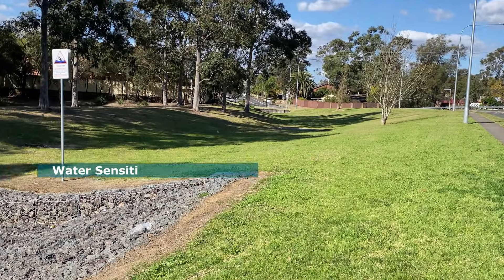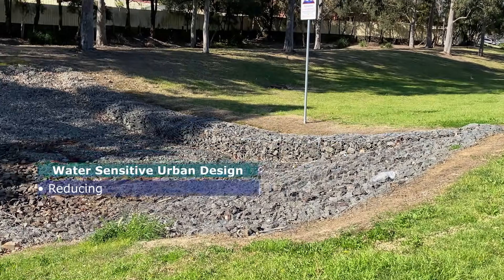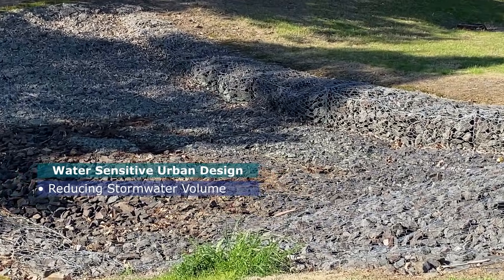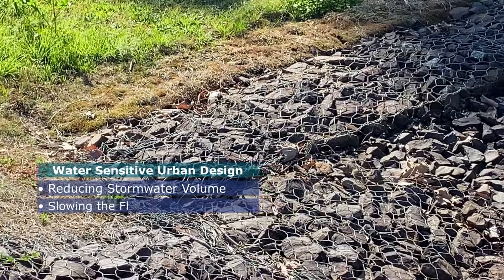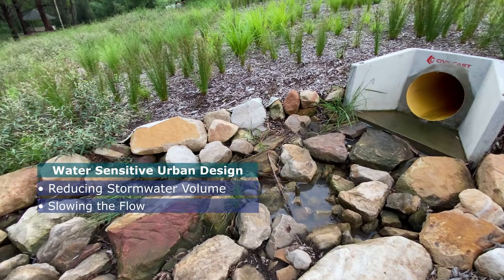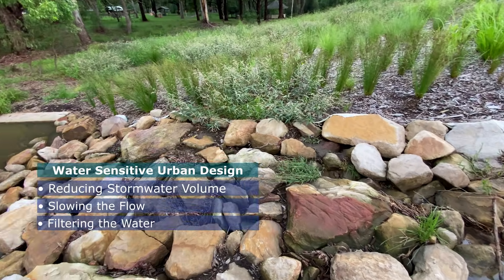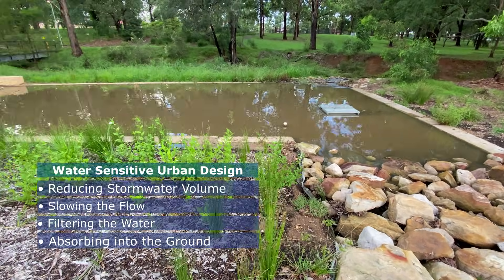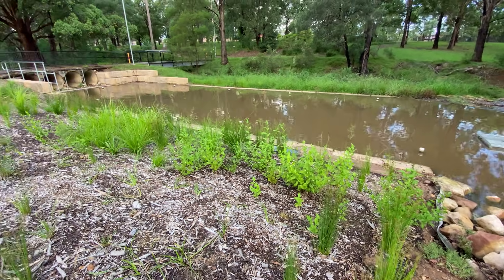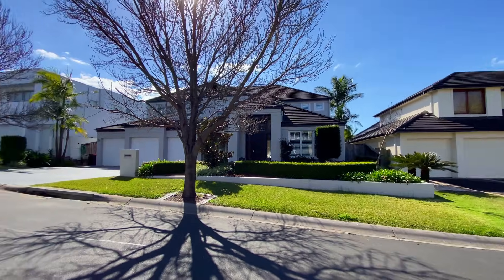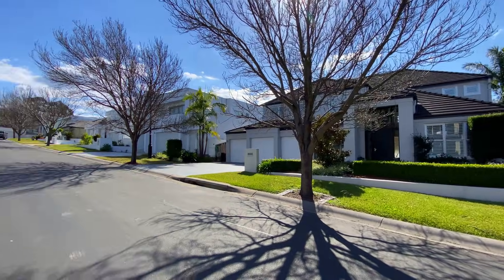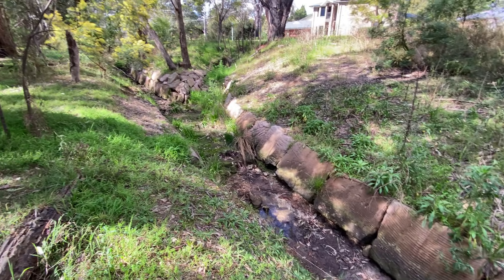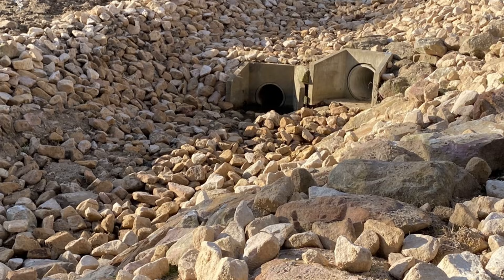But in water-sensitive urban design, stormwater volume is first reduced through engineered strategies. Then, by slowing its flow and applying appropriate measures, the water is gradually filtered and absorbed into the ground. In this system, the amount of runoff from residential sites is minimised, and natural drainage paths in urban areas are identified, preserved or enhanced.